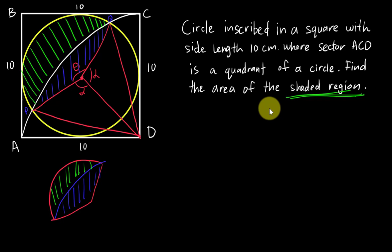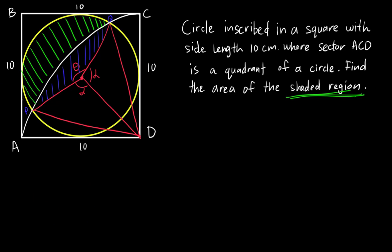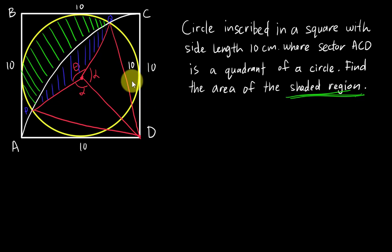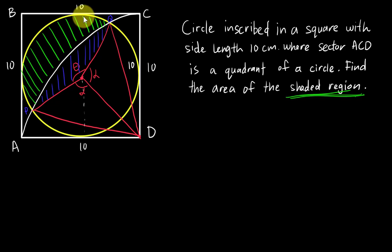Now you roughly know what I want to do, so I'll show you the working. First, I need to sort out this triangle. The square side is 10, and since this is a sector, this length is also 10. Because this is the center of the inscribed circle, the radius is 5, so this side is 5.